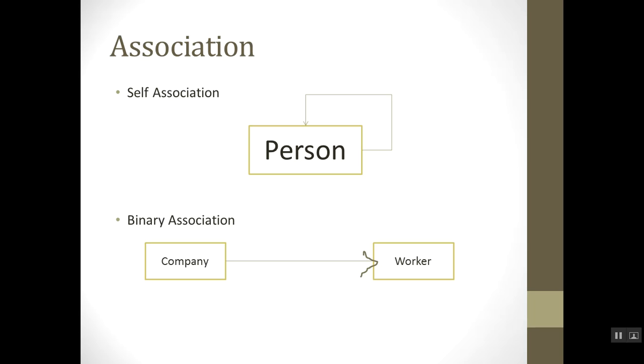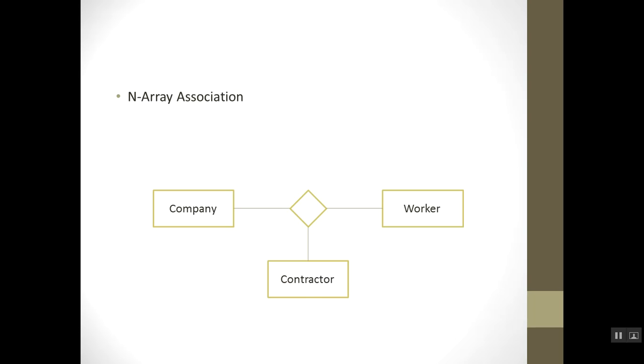In an n-ary association, the number of classes involved is more than two. For example, company, worker, and contract all have a relationship together. We can say that an employment relationship involves a company class, a worker class, and a contractor class.